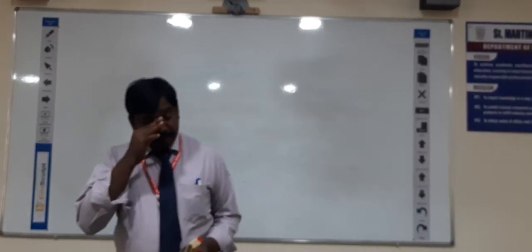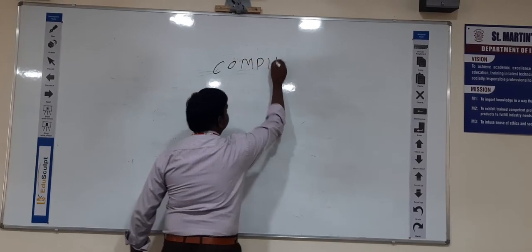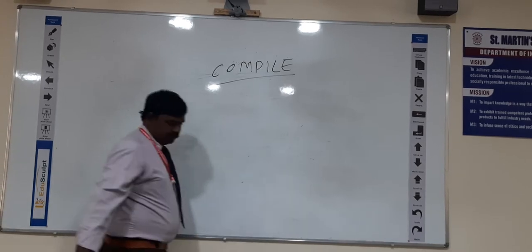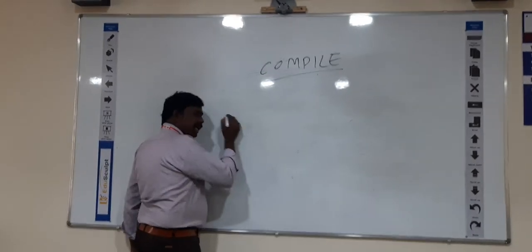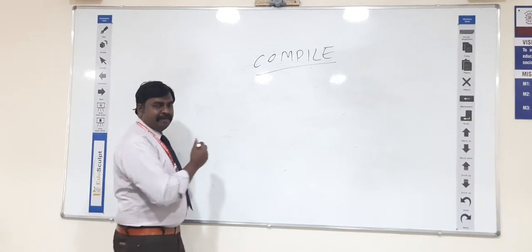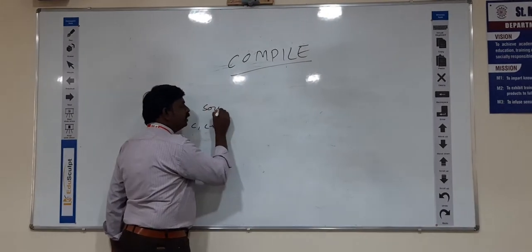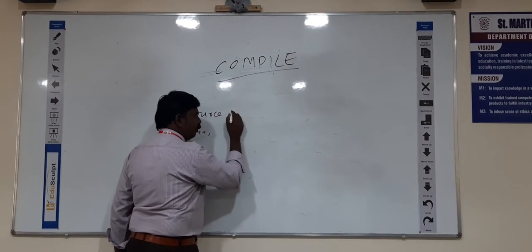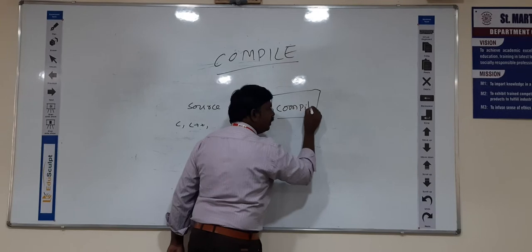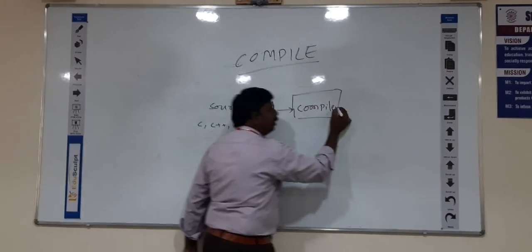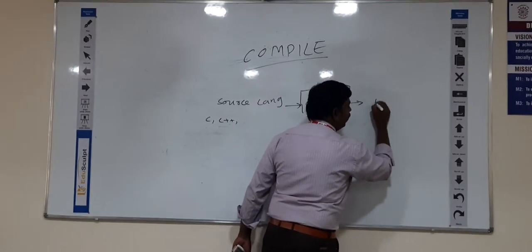Today I am giving a lecture about principles of compiler construction. So what is a compiler? We need to understand. So whatever you write in a general source language like C or C++, it needs to be converted. The source language, such as Python, will be compiled to convert to machine-understandable language or assembly language.